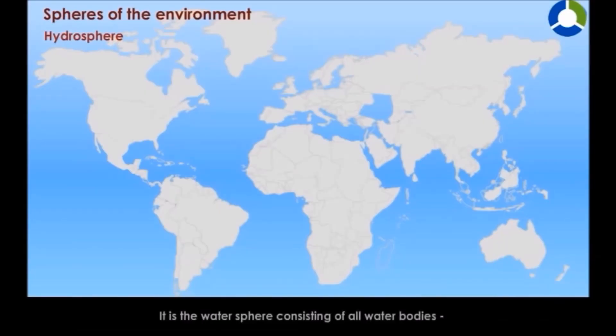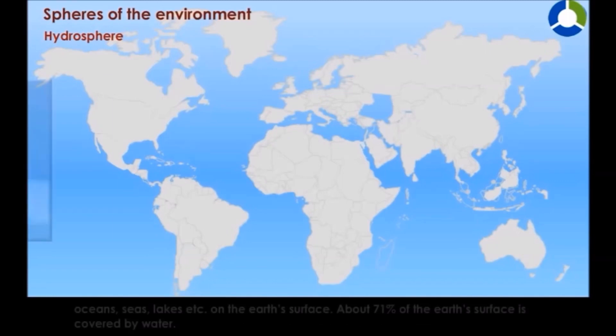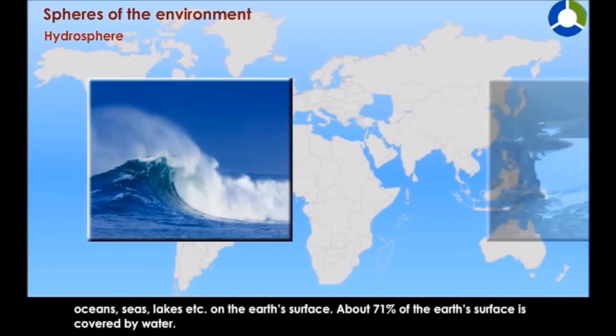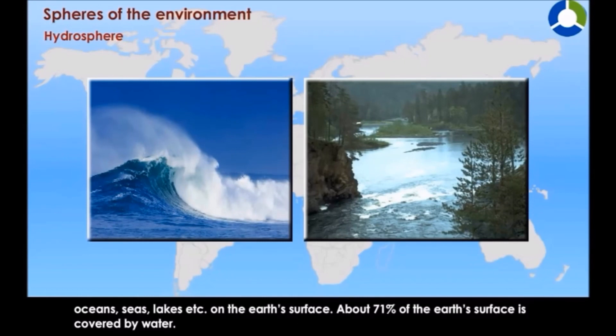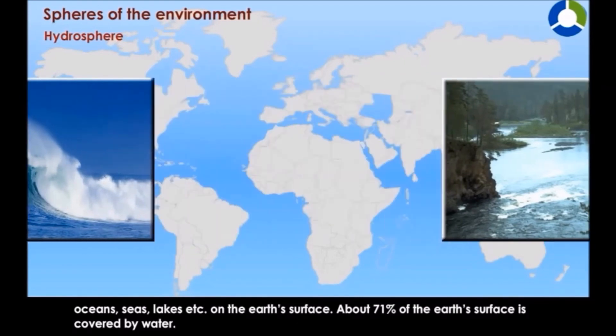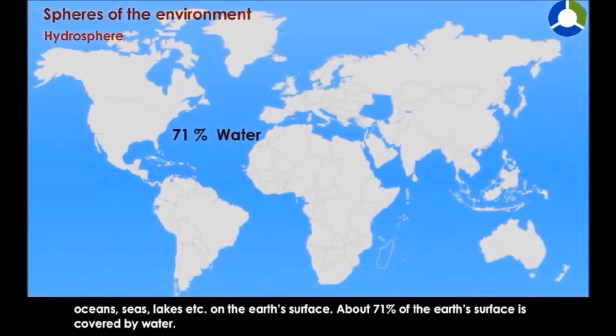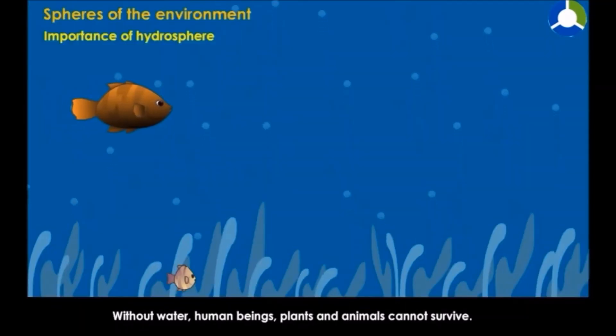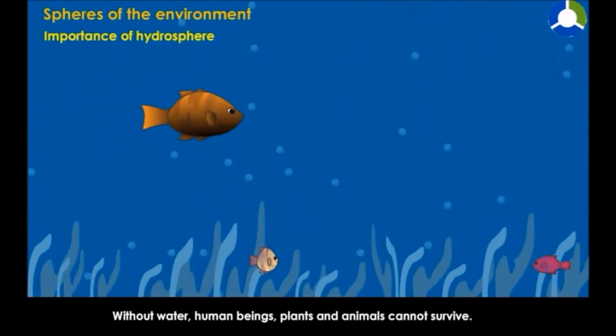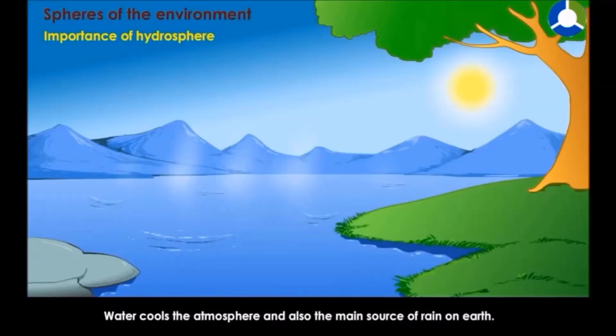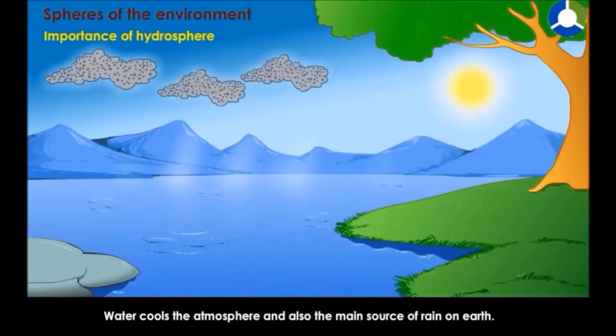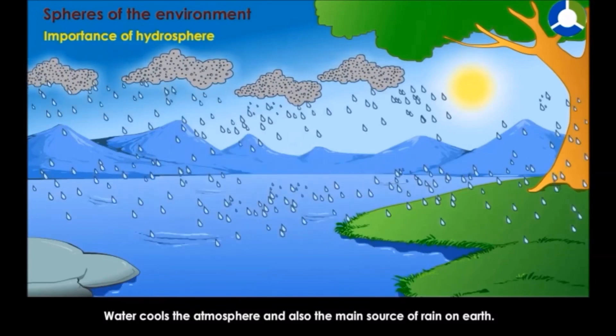Next is hydrosphere. It is the water sphere consisting of all water bodies—ocean, sea, lake, etc.—on the Earth's surface. About 71 percent of Earth's surface is covered by water. Without water, human beings, plants, and animals cannot survive. Water cools the atmosphere and is also the main source of rain on the Earth.